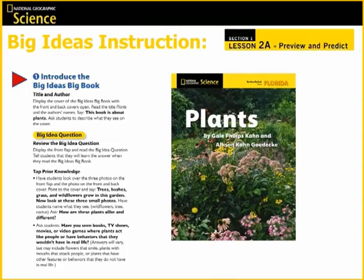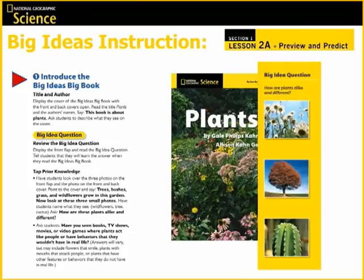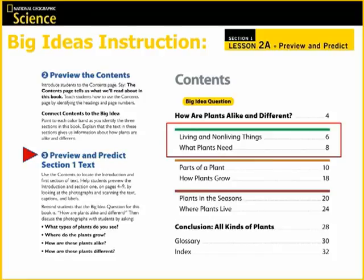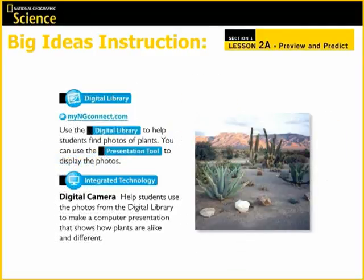Following the explore activity, each topic begins with the same two lessons. The first one is Lesson 2A, Preview and Predict. Begin by introducing the Big Ideas Big Book and reviewing the Big Idea question using the flap from the Big Ideas Big Book. Then preview the contents page and help students make a connection to the Big Idea. Step 3 has you previewing and predicting the first section with the students by looking at the photographs and scanning the text, captions, and labels, then using the probing questions provided in the teacher wrap. In the bottom of the teacher wrap, you will have reminders of the digital library and integrated technology.